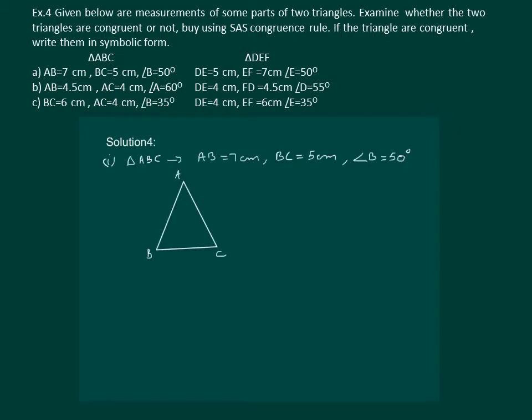Let us draw a rough figure of the triangles and mark the information given. For triangle ABC, we have AB = 7 cm, BC = 5 cm, and angle B = 50°. For triangle DEF, we are given DE = 5 cm, EF = 7 cm, and angle E = 50°.